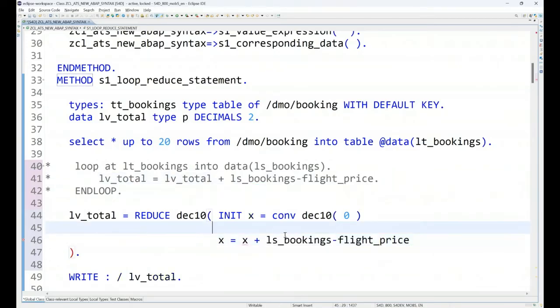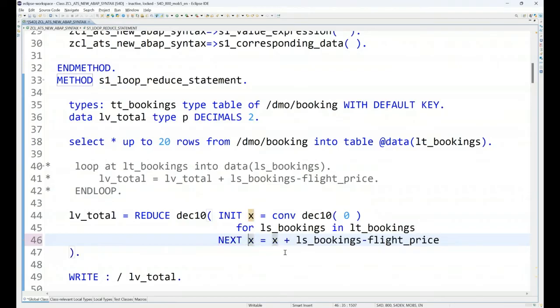And let's start the loop. So for ls_bookings in my internal table, perfect, and then once the loop is done, before you go to the next loop pass, please total my amount. So reduce initializes a variable, like in this case we initialize a total variable on the top. This is what initialization is doing, creating a decimal type of a variable x. And then we have the loop which is going to be an inline loop, and then after that we say every next processing will be done by keep on adding the price with the x. At the end we will get the value of x in our lv_total which we are printing.